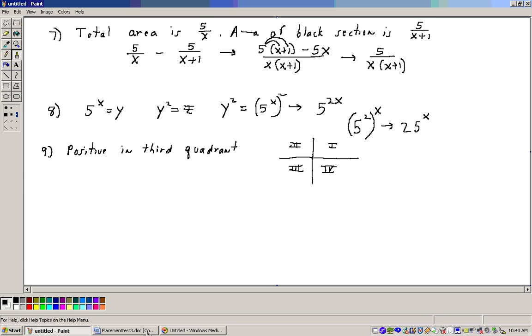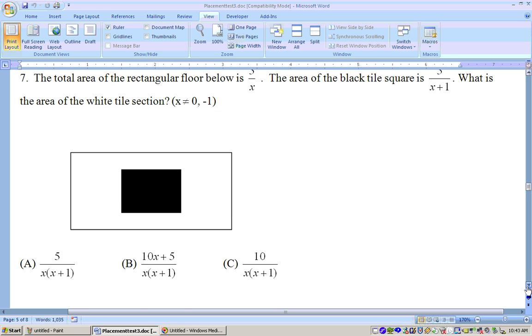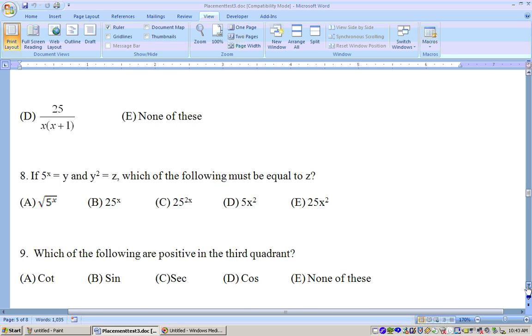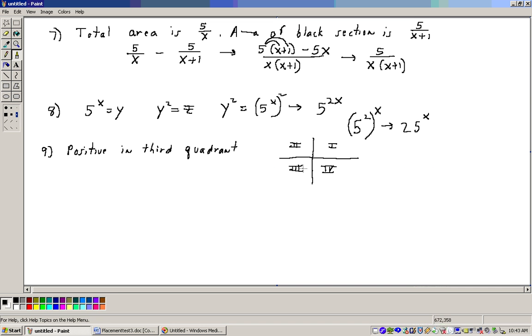On problem number 9, it says which of the following are positive in the third quadrant? Cotangent sine, secant cosine, or none of these. Well, let's see. Positive in the third quadrant. The third quadrant is this quadrant right here when you're graphing. It goes around counterclockwise, 1, 2, 3, 4.